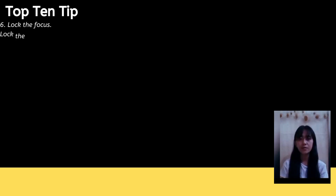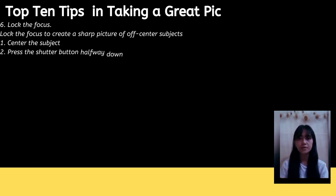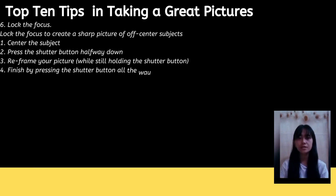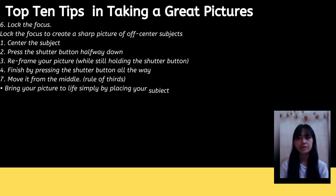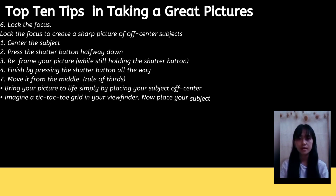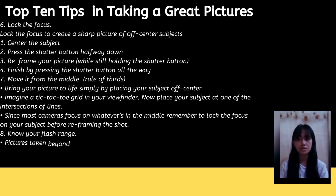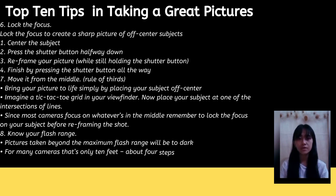Tip 6: Lock the focus to create a sharp picture of off-center subjects. To do this: first, center the subject; second, press the shutter button halfway down; third, reframe your picture while still holding the shutter button halfway; and lastly, finish by pressing the shutter button all the way down.